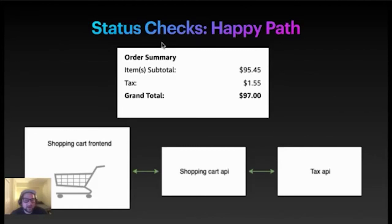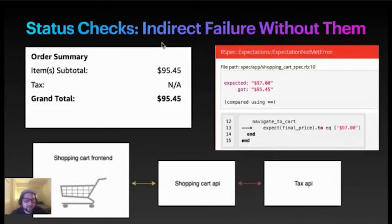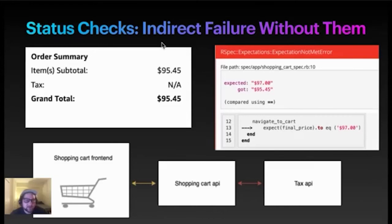Our tests normally pass for this shopping cart. However, let's say one day you get into work and you see this failure: an expectation not met error. Instead of $97, the test is getting $95.45. You'd be like, what's going on? Is the error with the shopping cart API? Is the error with the tax API? What's actually going on under the hood? It's not clear — you'd have to dig into that because of your infrastructure. There are kind of two dependencies to get this data in the right state.